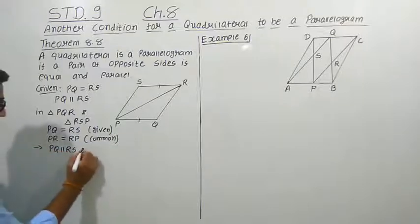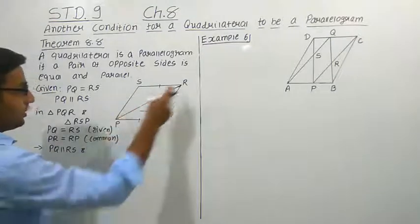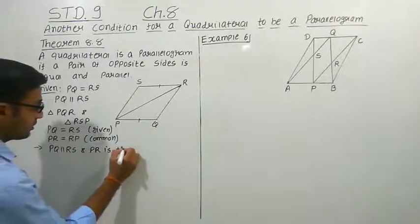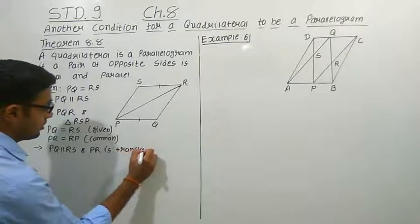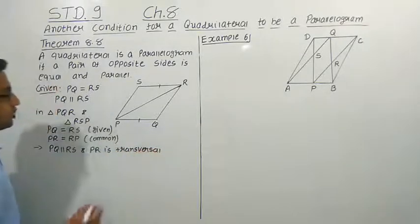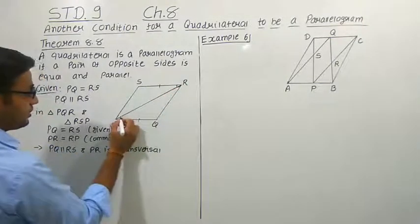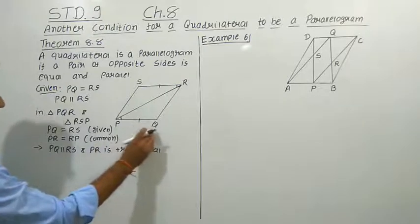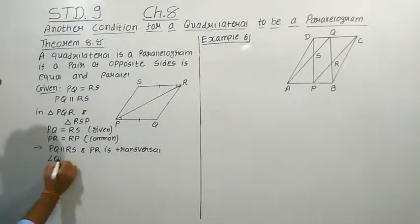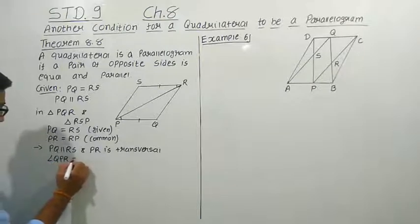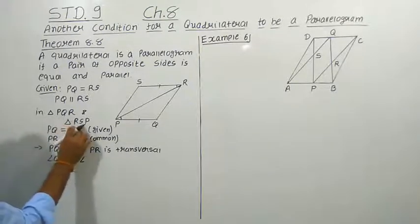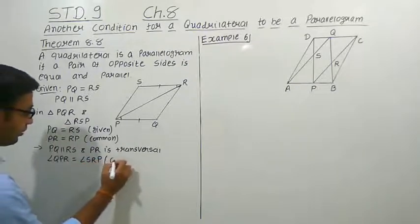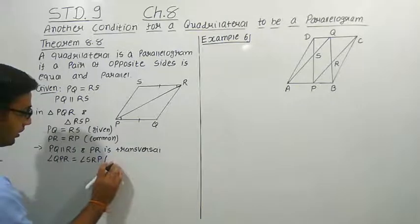Taking PQ parallel to RS with PR as the transversal, this angle and this angle will become equal according to the alternate interior angle theorem. So angle QPR will become equal to angle SRP, by alternate interior angles.